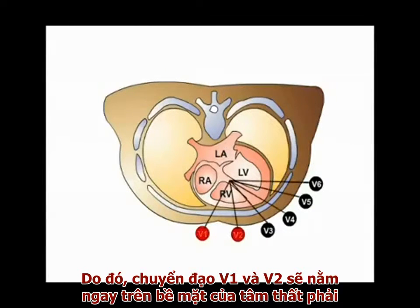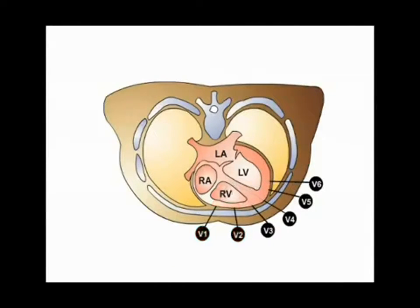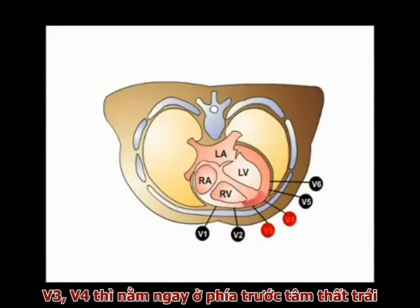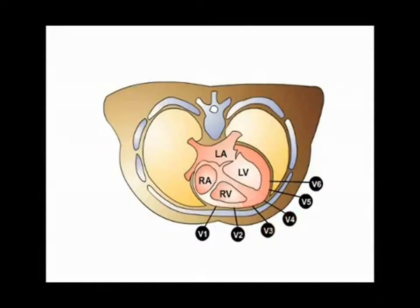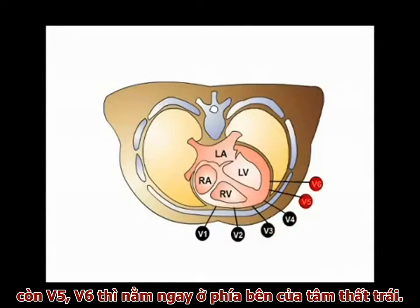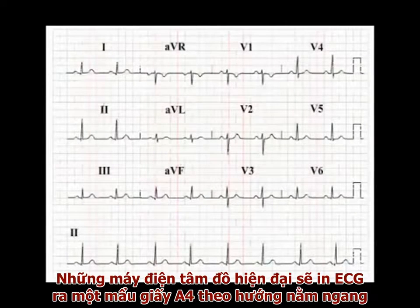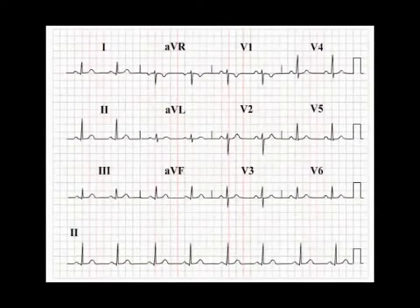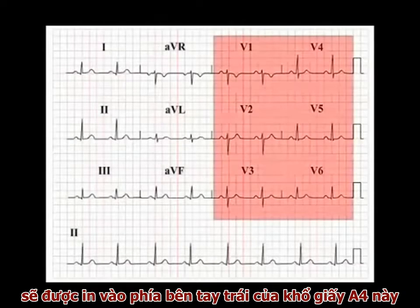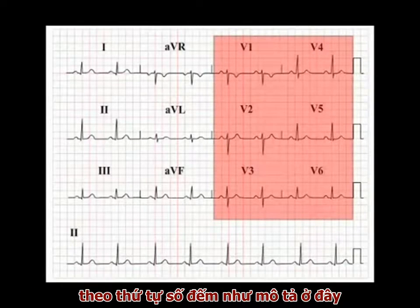Therefore, V1 and V2 face the anterior surface of the right ventricle. V3 and V4 look at the anterior surface of the left ventricle, while V5 and V6 look at the lateral surface of the left ventricle. Modern machines present the printed ECG readout landscaped on an A4 piece of paper, and the signal from each of the chest leads is recorded on the left-hand side of this A4 ECG readout, in numerical order as shown here.